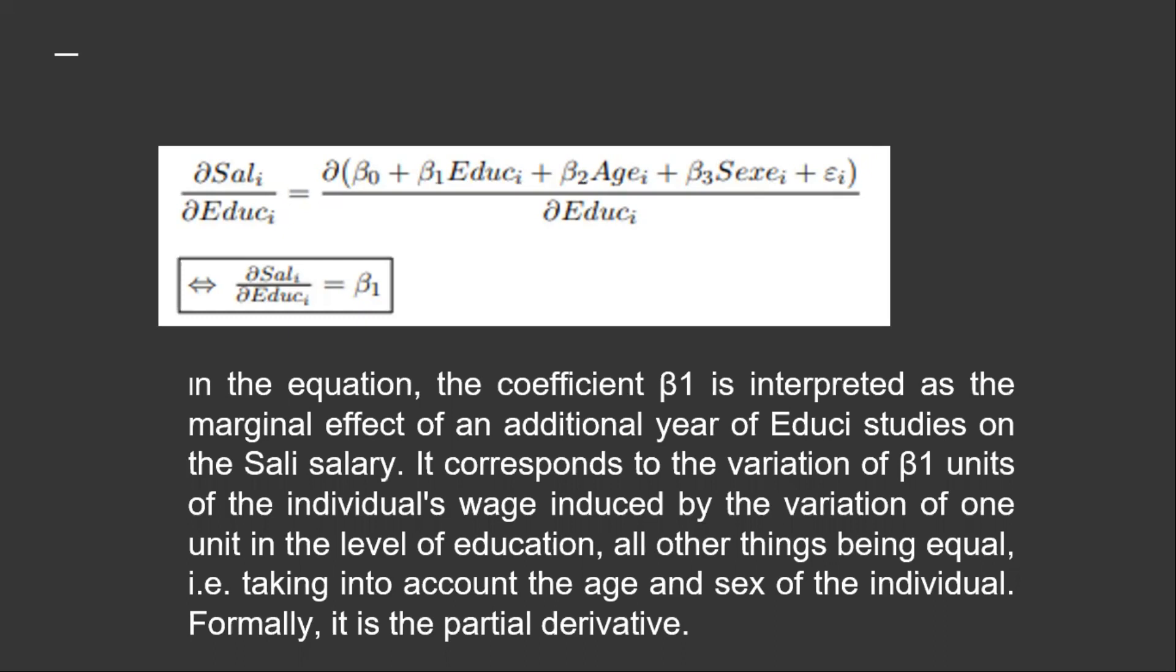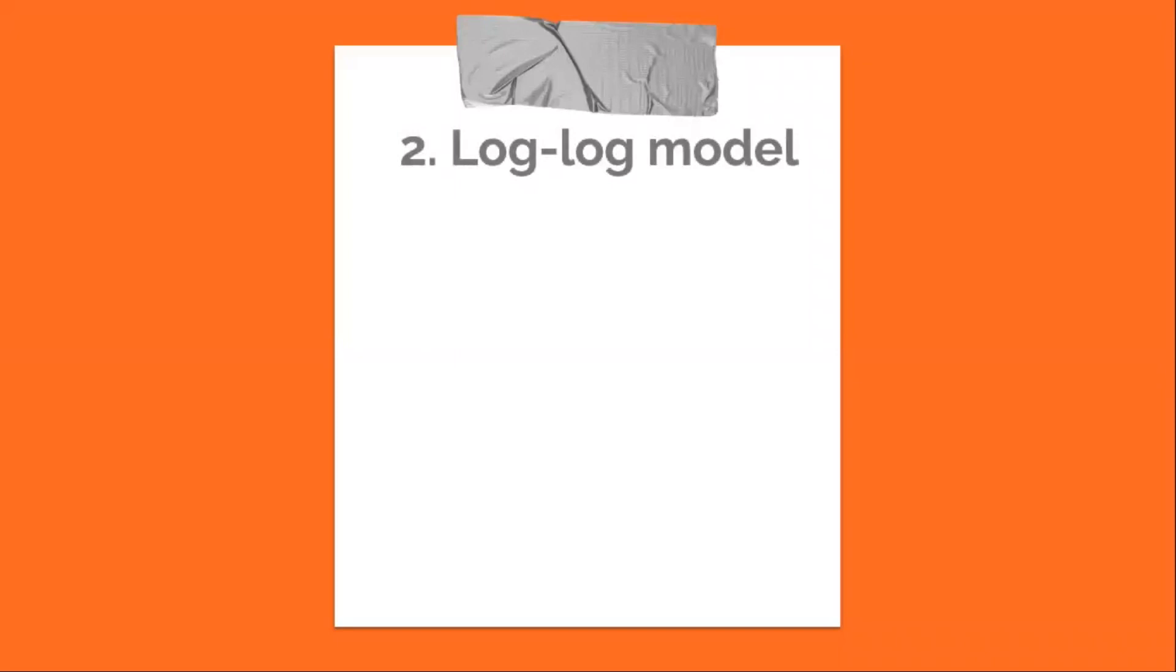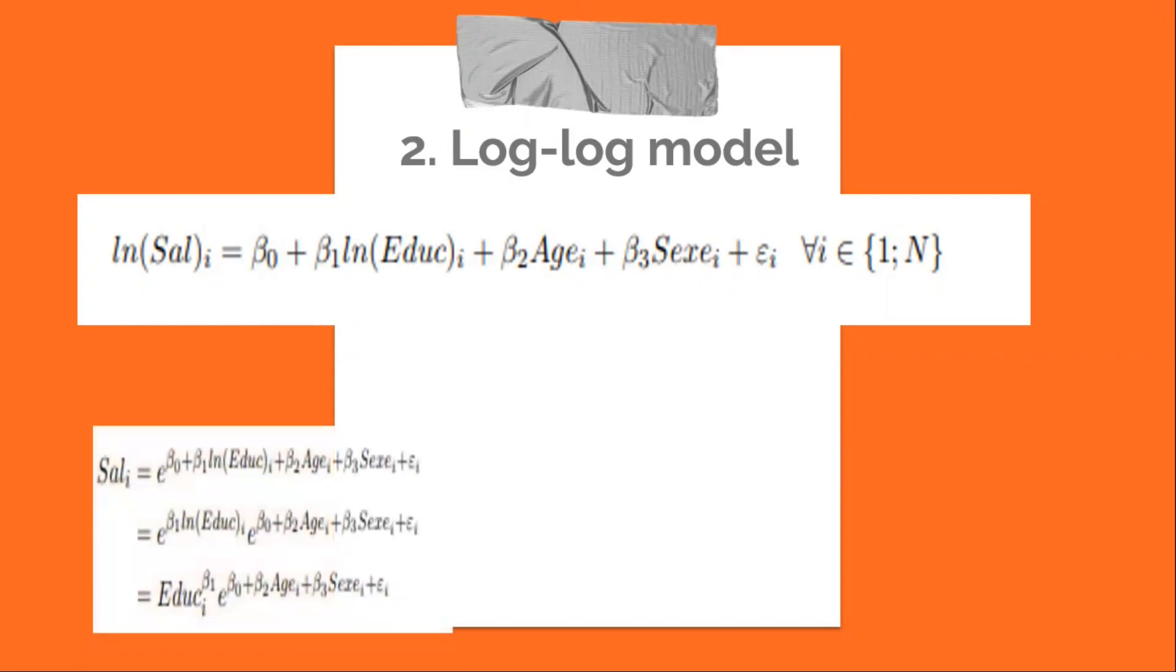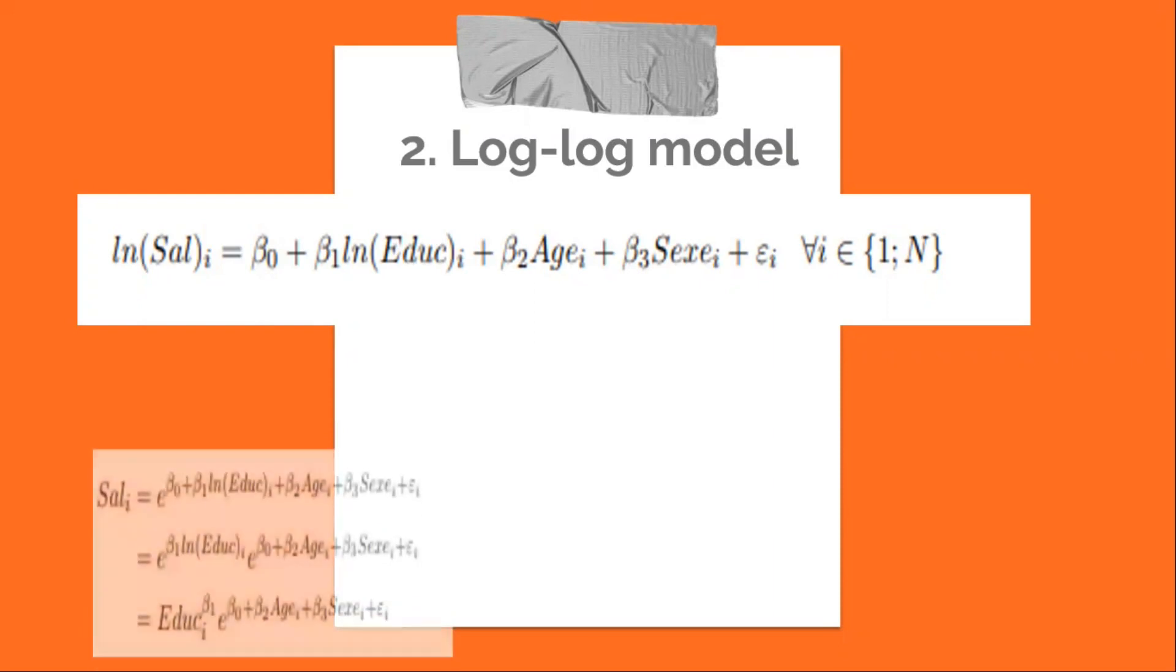Log-log model: Consider the same model as before, but in which the dependent variable, salary, and the independent variable, education, are expressed in logarithm. To know how to interpret the coefficient beta_1, it is necessary to study, as before, the partial derivative of wages with respect to education. To do this, we can rewrite the equation by performing an exponential transformation.